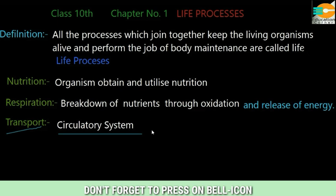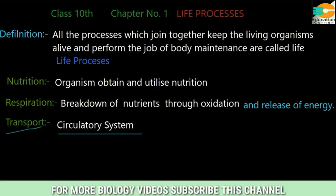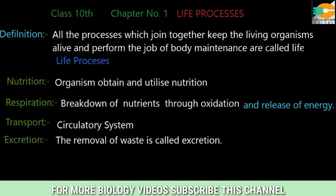Next is the transport system, also called the circulatory system. Our food has already been absorbed in the small intestine with the help of blood. In the blood circulatory system, we have to study the blood and blood vessels — how blood transports our food throughout the entire body.